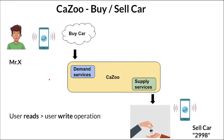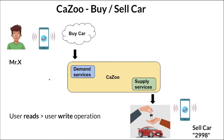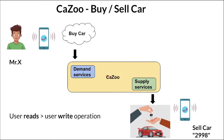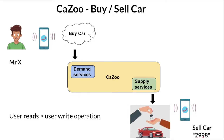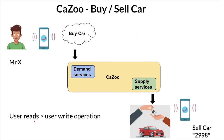In system design, I would prefer to ask more questions to the interviewer before starting to model. For example, looking at the data — how many cars are available? Is it 1 lakh, thousands, or millions? We should ask how much data the system has to handle. In this case, the number of cars is 2,998 currently.